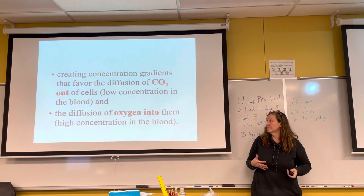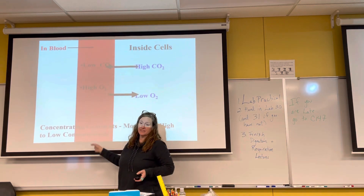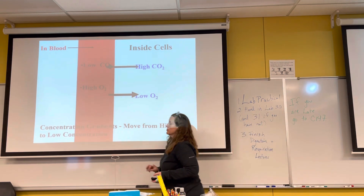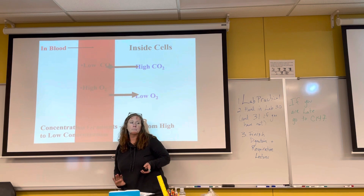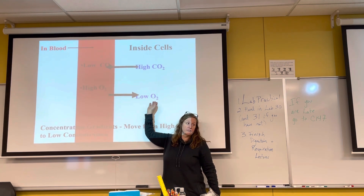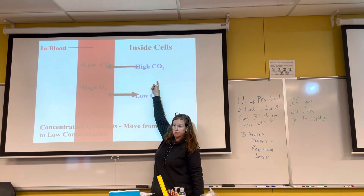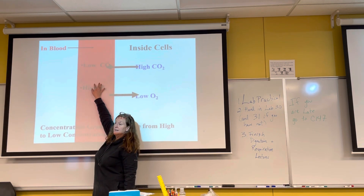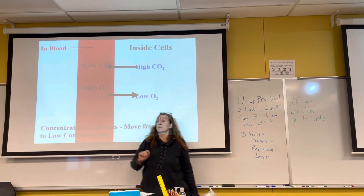Think of it like this: arteries go away from the heart, getting smaller and smaller, eventually branching to capillaries that bring a high concentration of oxygen to the cells. Cells constantly use oxygen for cellular respiration, so oxygen diffuses from high to low concentration. As oxygen gets used up, carbon dioxide is produced and diffuses from cells to the capillary, which leads to a venule and then a vein — and veins go to the heart.